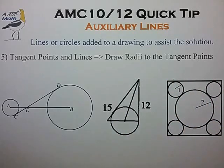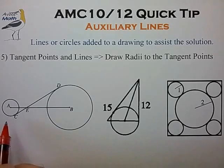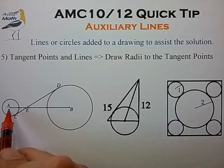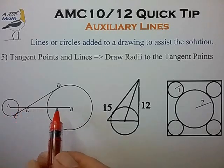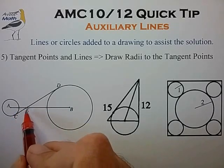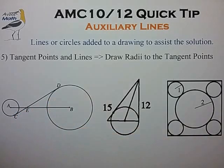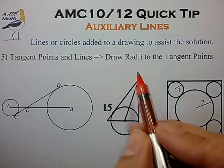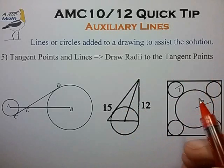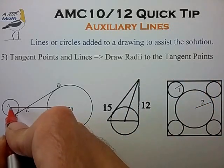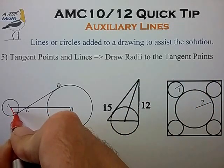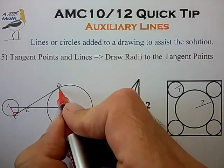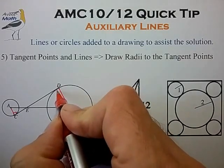We have a few examples where we can use this rule without even reading the question. In our first example we have two circles connected by their centers A and B, and a tangent line drawn from C to D as shown. The two natural auxiliary lines to draw here are the radii to the tangent points — so we draw the radius from A to tangent point C, and the radius from B to tangent point D.